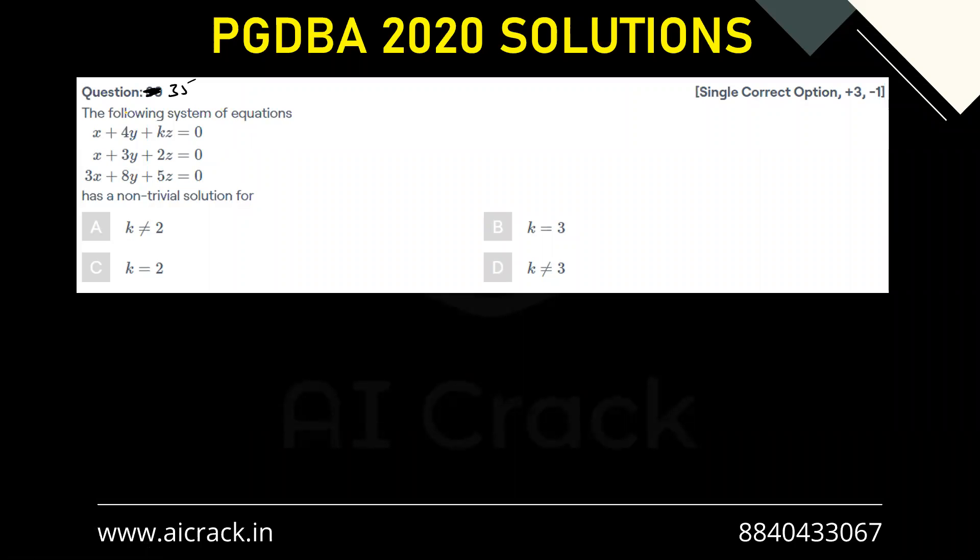Hi everyone, let's solve question number 35. We have the following system of equations: x plus 4y plus kz equals 0, x plus 3y plus 2z equals 0, and the third equation has a non-trivial solution.